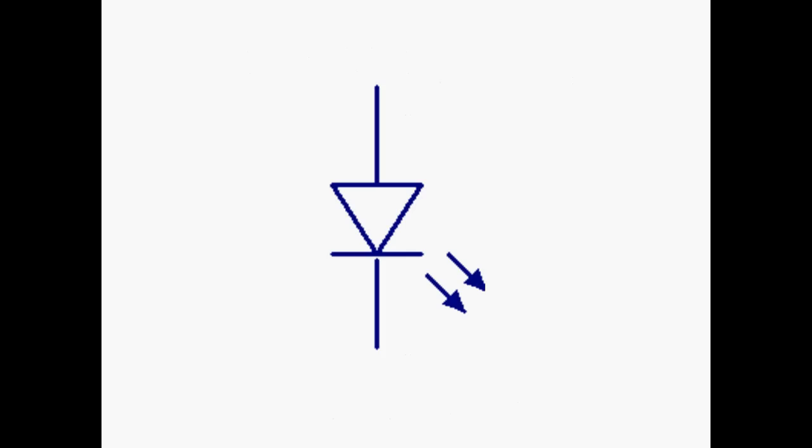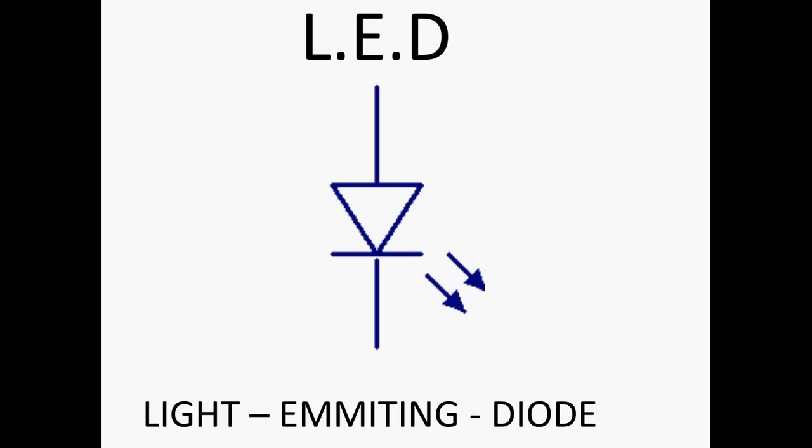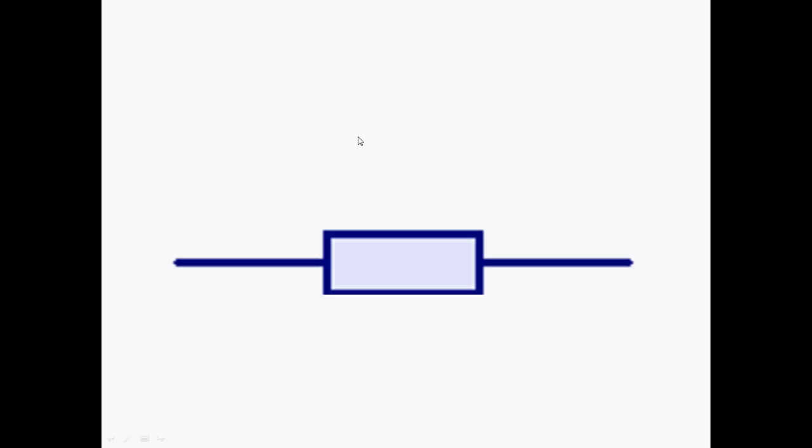This one is, you should all know if you don't know this one by now you should probably leave. LED, light emitting diode. The two legs are anode and cathode. You can tell it's a light emitting diode because it looks like a diode symbol but it's got these two arrows which means giving out light. Seriously, if you don't know that one, I don't even know what to say to you.